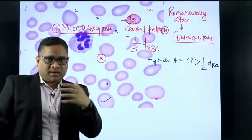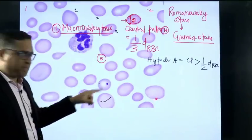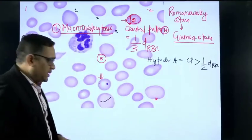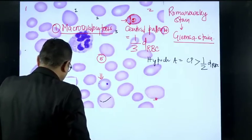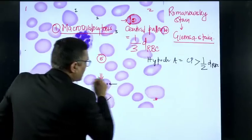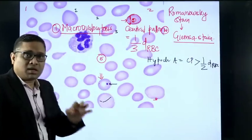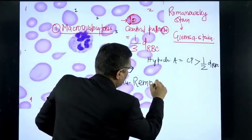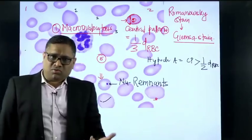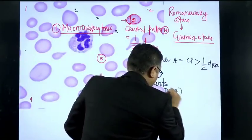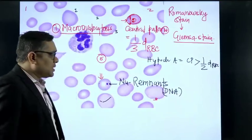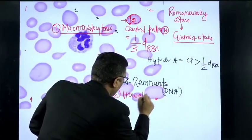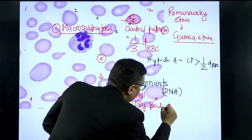When we look at the central part, we observe one more RBC with a very important and peculiar finding: a blue color dot. This blue color dot is the remnant of the nucleus — these are nuclear remnants. Nuclear remnants are made up of DNA, and these are called Howell-Jolly bodies. This is the second important finding: Howell-Jolly bodies.